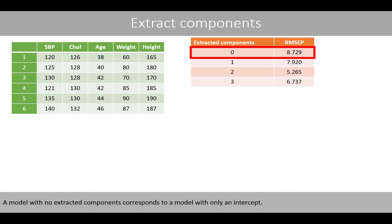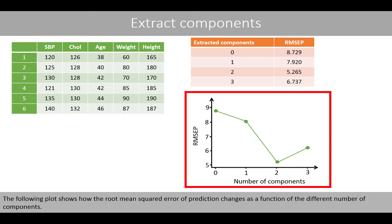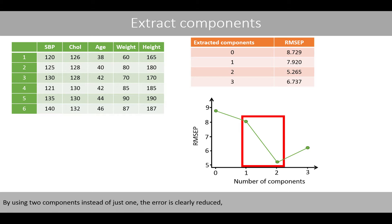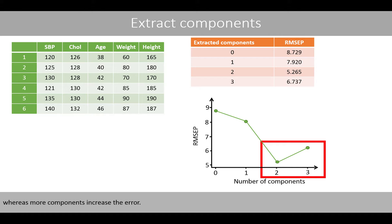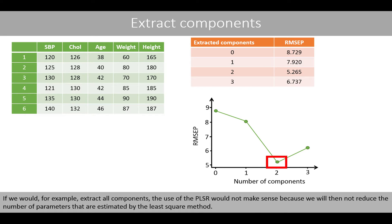A model with no extracted components corresponds to a model with only an intercept. We can see that the model based on two components results in the lowest root mean squared error of prediction. The following plot shows how the root mean squared error of prediction changes as a function of the number of components. By using two components instead of just one, the error is clearly reduced, whereas more components increase the error. We should aim to use as few components as possible that result in as small an error as possible. If we extracted all components, PLS regression would not make sense because we would not reduce the number of parameters estimated by the least squares method.